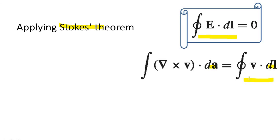Instead of V we need to substitute E. So the equation can be written like this: closed line integral of E dot dL equal to surface integral of del cross E dot dA. That's equal to zero.